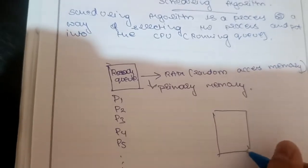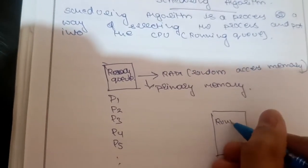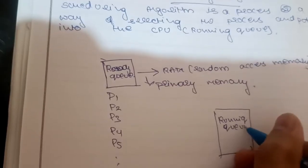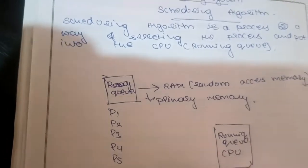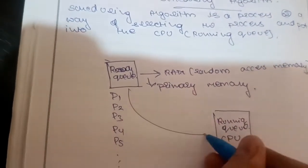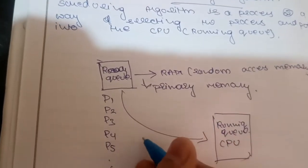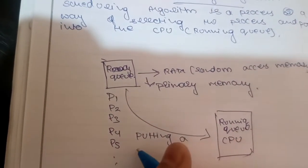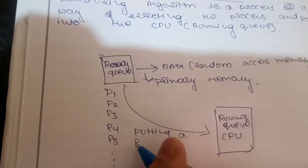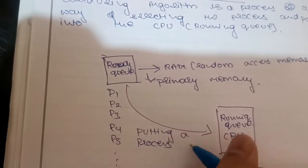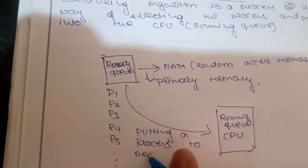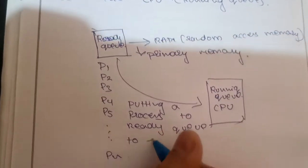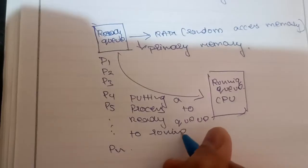The way of scheduling algorithms: the running queue is nothing but the CPU. The CPU is executing the program — that is the running queue. So as I told before, a process is taken from the ready queue and put into the running queue.